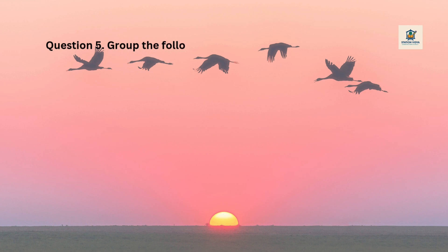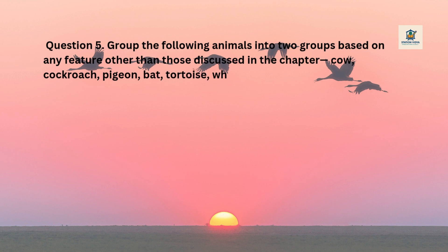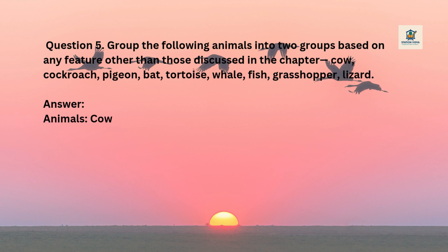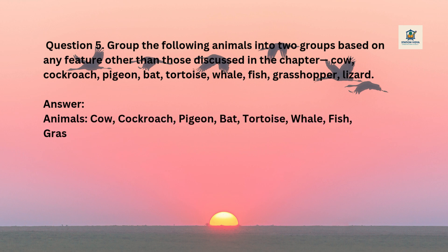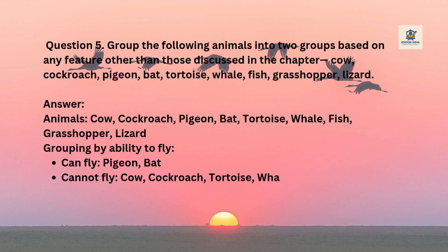Question 5: Group the following animals into two groups based on any feature other than those discussed in the chapter. Animals: cow, cockroach, pigeon, bat, tortoise, whale, fish, grasshopper, lizard. Answer — Grouping by ability to fly. Can fly: pigeon, bat. Cannot fly: cow, cockroach, tortoise, whale, fish, grasshopper, lizard.